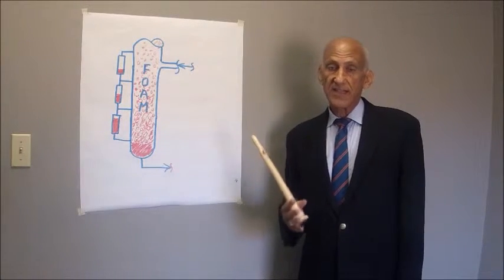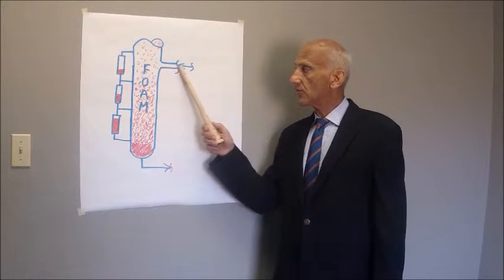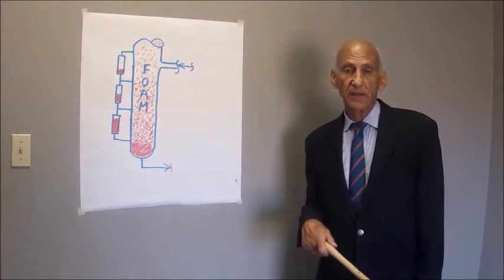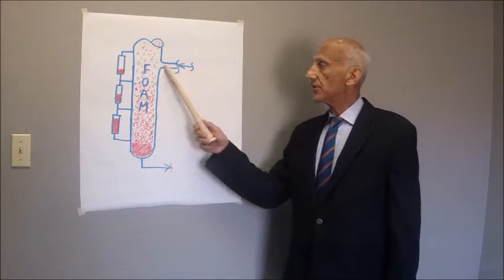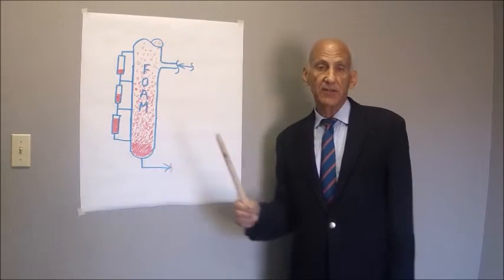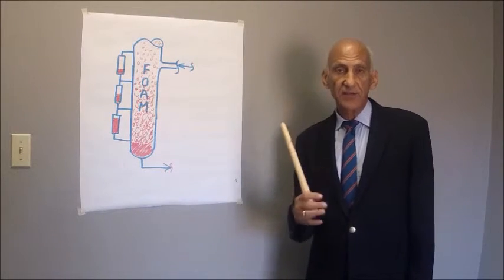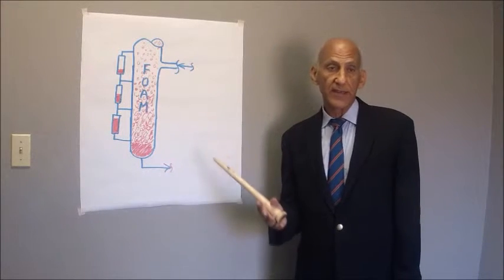Again, as I said in the previous lesson, once the foam level rises above the vapor inlet or the re-boil return nozzle, then the force of the vapor entering the tower will blow the light foam up the tower and cause massive carryover of liquid or foam. And if this is a tray tower,